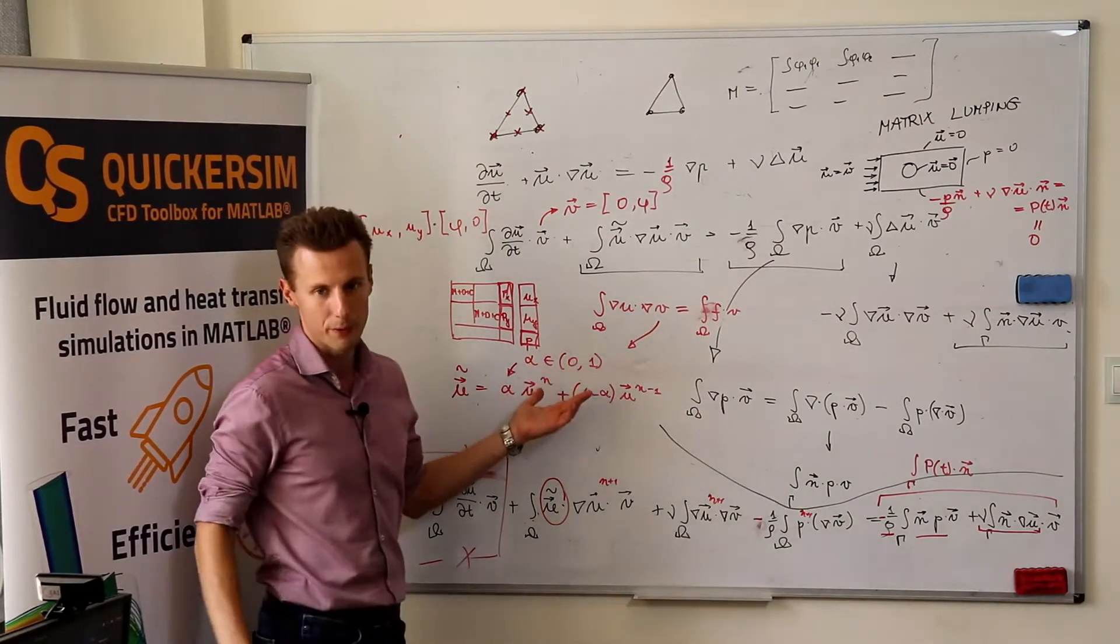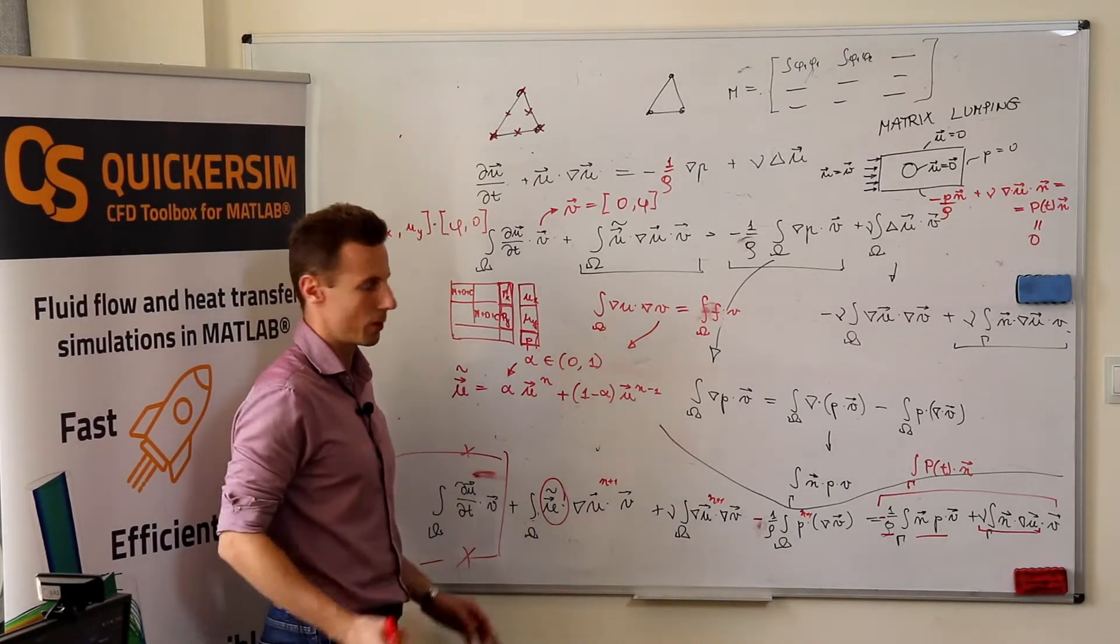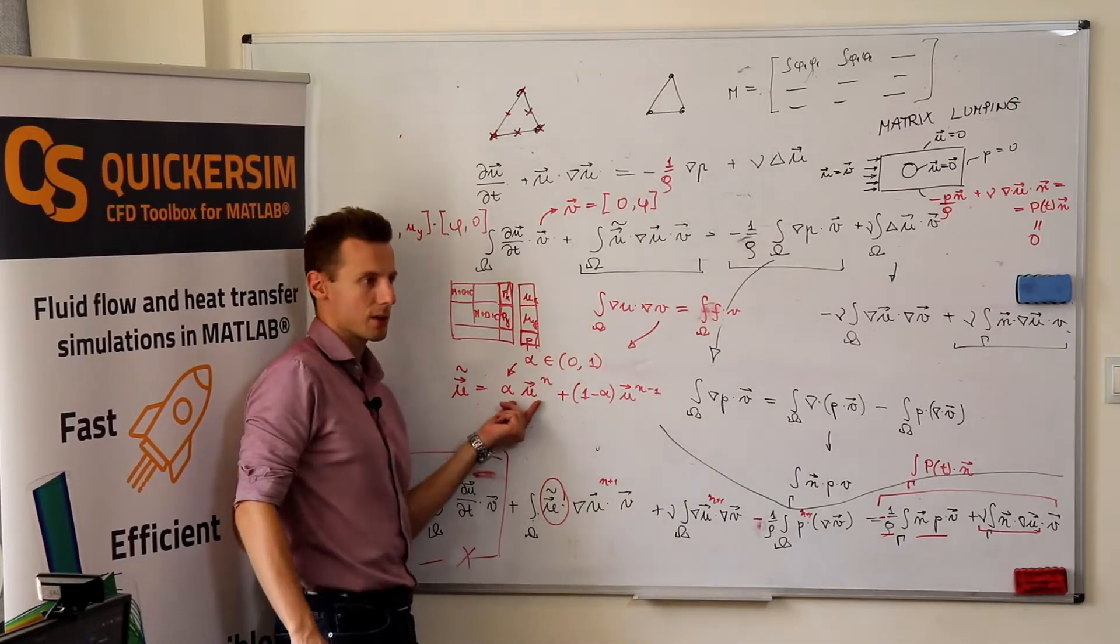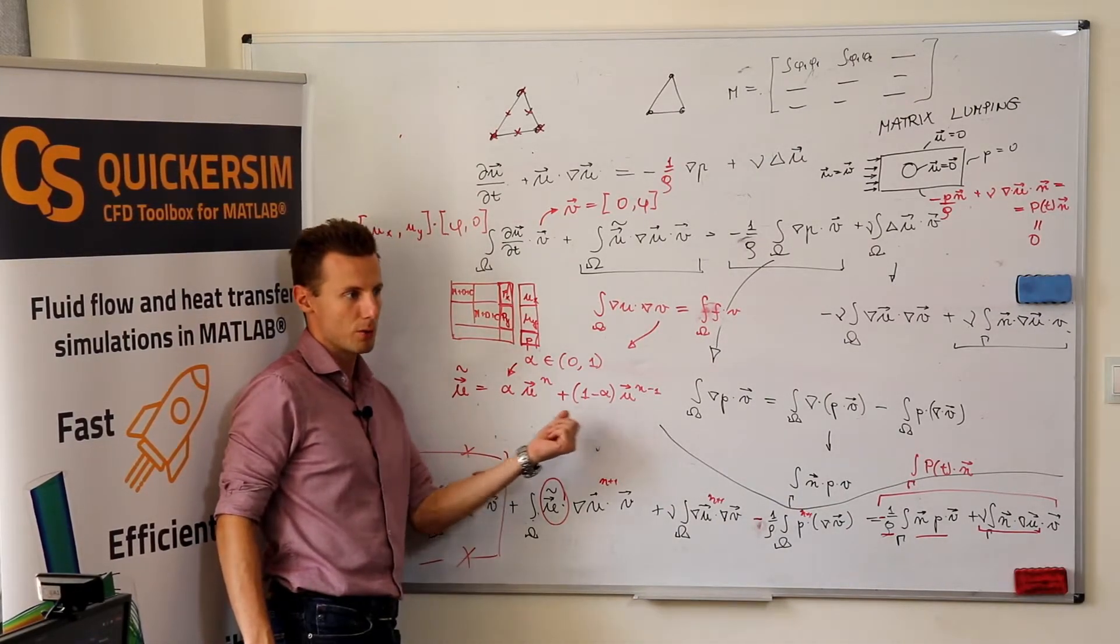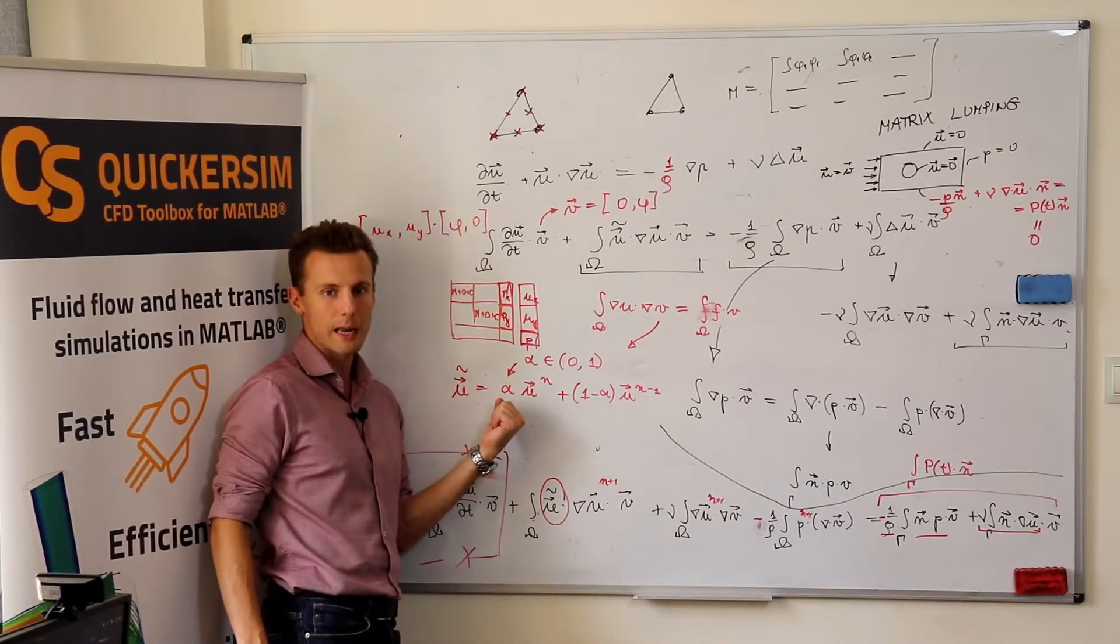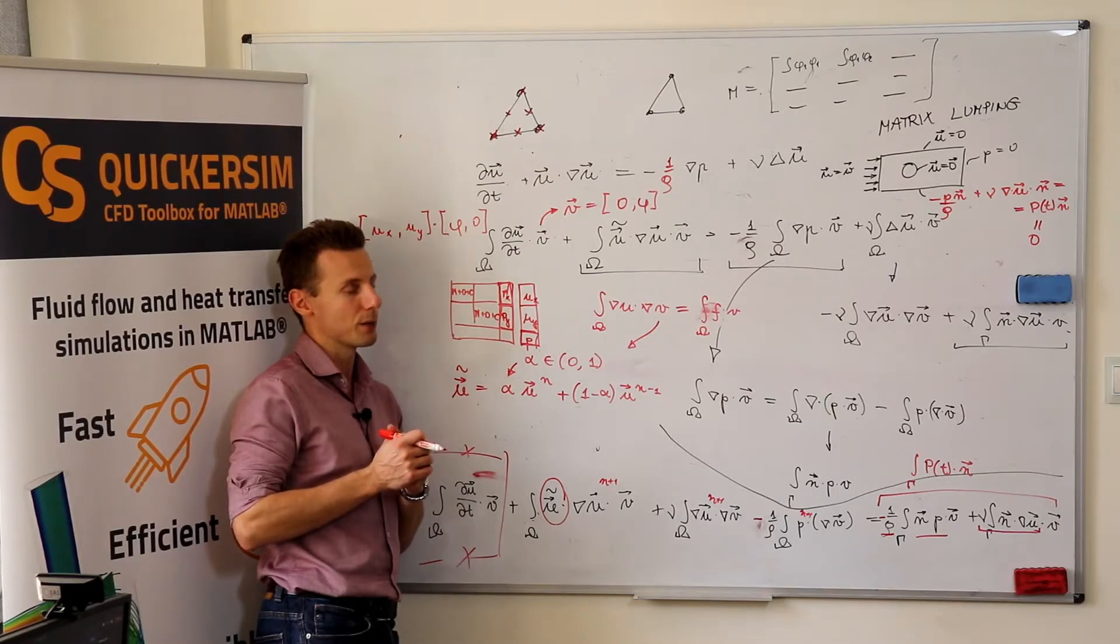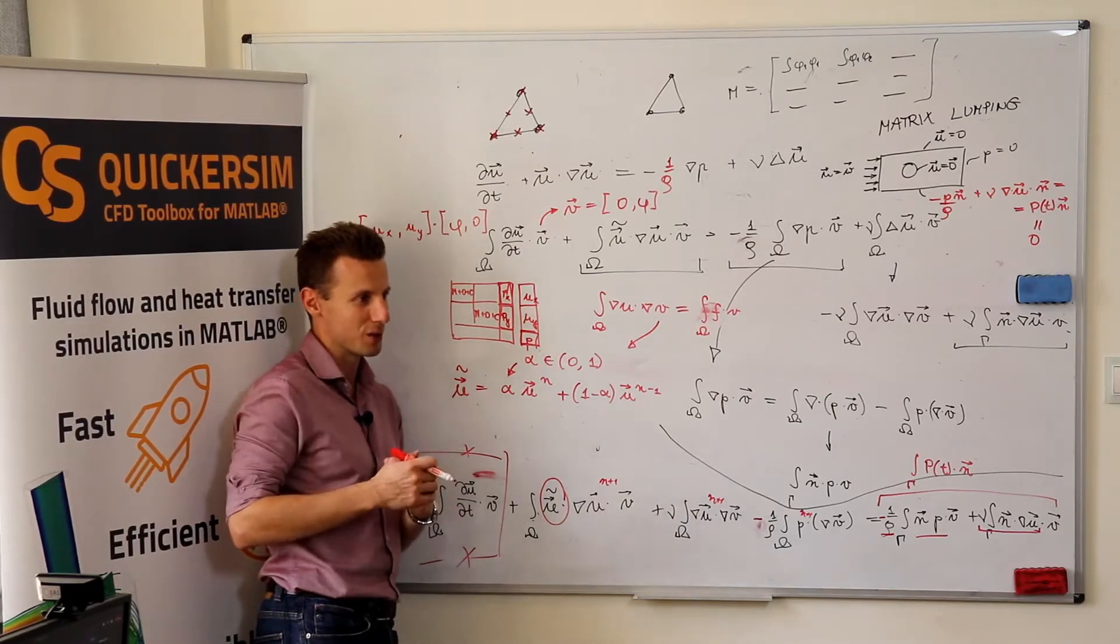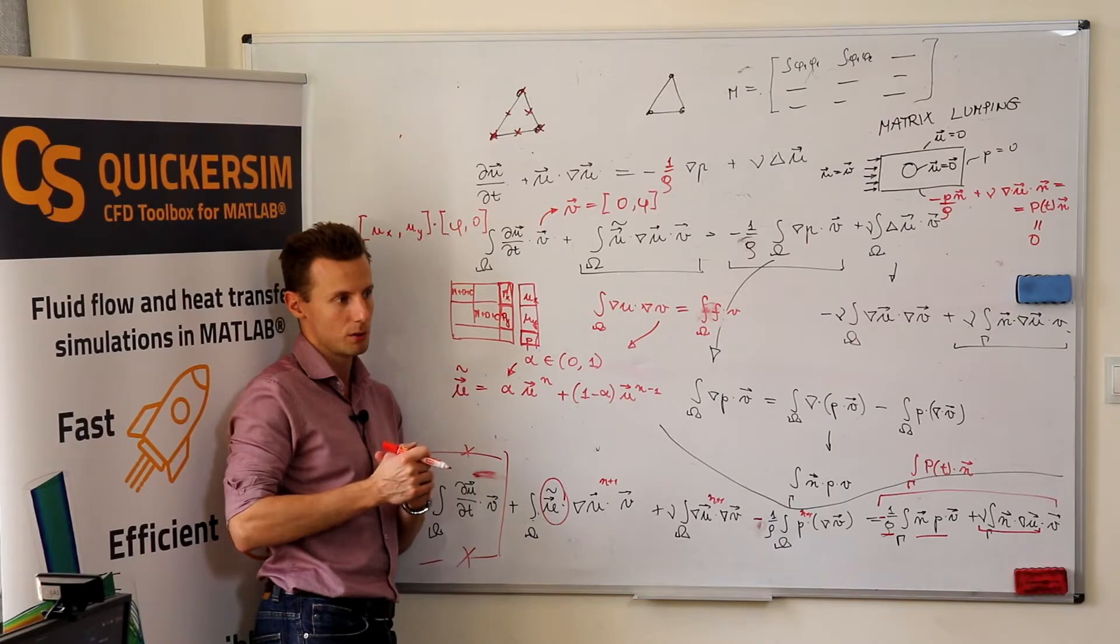If you want to do under relaxation, probably something like half, maybe 0.6, you need to experiment that. So, you take just a fraction of the new solution and the previous solution, so this actually slows down the rate of evolution of your convection velocity and it's, in many ways, it's safer.